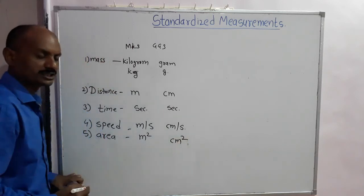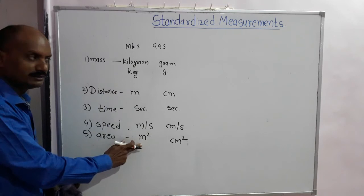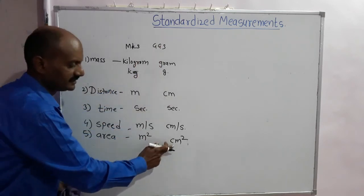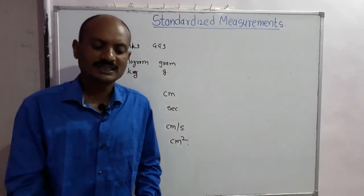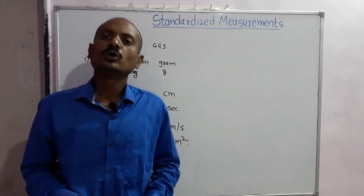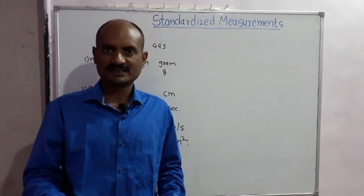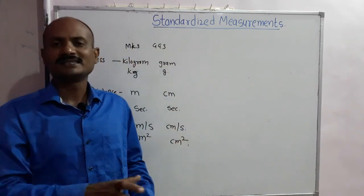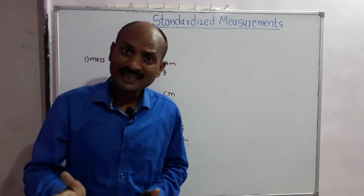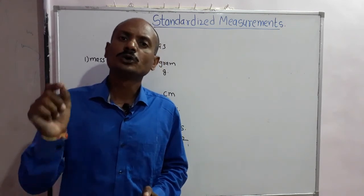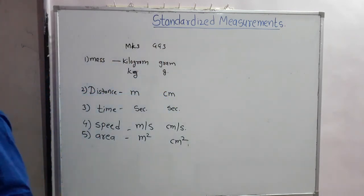In the CGS system, the unit of area is centimeter squared (cm²). So the unit of area in the MKS system is meter square and in the CGS system is centimeter square. This is how we standardize measurements.